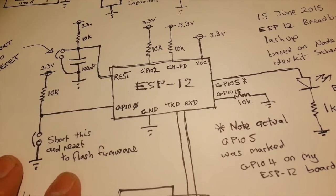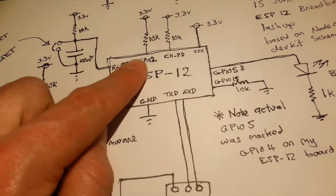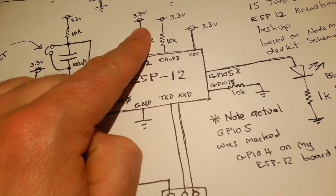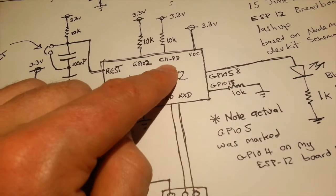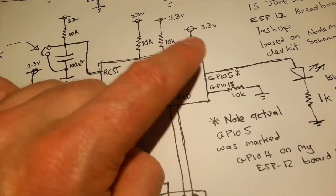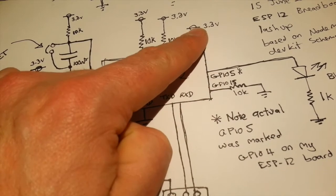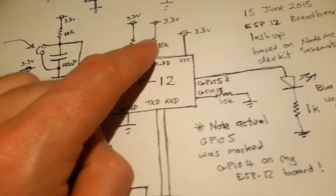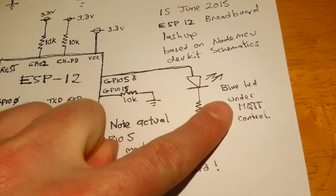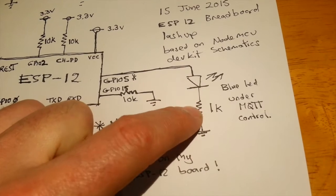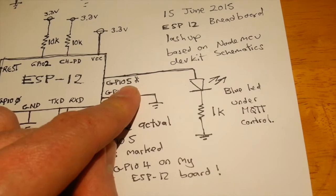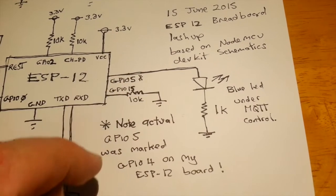And then we get to the heart of the board and it's the ESP12 module. And yeah, following the NodeMCU schematics, what I've got is GPIO2 tied with a 10K resistor to 3.3V. CH-PD tied to 3.3V with a 10K resistor. VCC of course going straight to 3.3V. I've got the blue LED here that's responding to the MQTT messages and lighting up, connected to GPIO5.